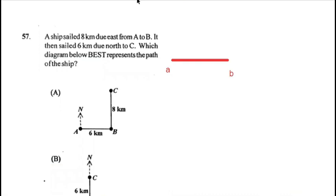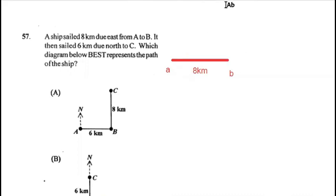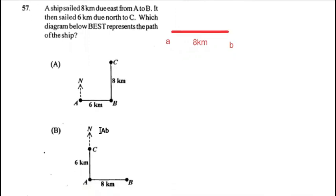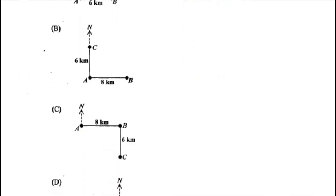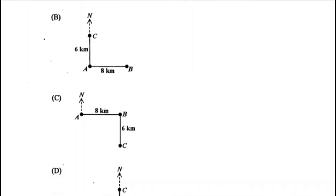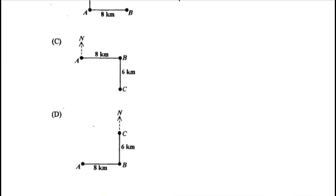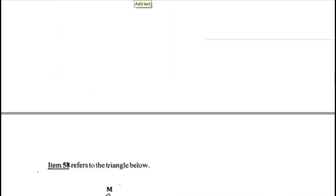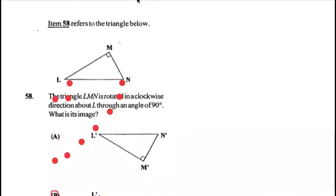Question 57: a ship sailed 8 km due east from A to B, then sailed 6 km due north to C. The first line A–B must be 8 km eastward, then from B it goes north 6 km. Option A has the wrong label, B shows movement from A northward instead of B, C goes south — so D is the correct diagram. Answer for 57 is D.